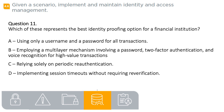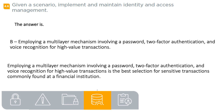Question 11. Which of these represents the best identity proofing option for a financial institution? A. Using only a username and password for all transactions. B. Employing a multi-layer mechanism involving a password, two-factor authentication, and voice recognition for high-value transactions. C. Relying solely on periodic re-authentication. D. Implementing session timeouts without requiring reverification. The answer is B: employing a multi-layer mechanism involving a password, two-factor authentication, and voice recognition for high-value transactions.